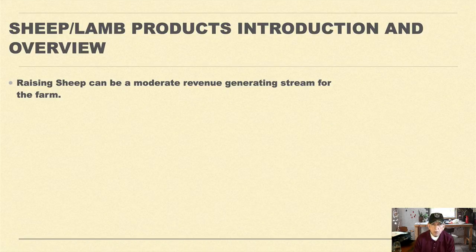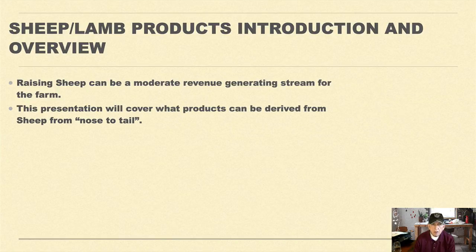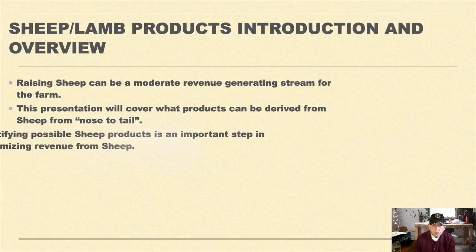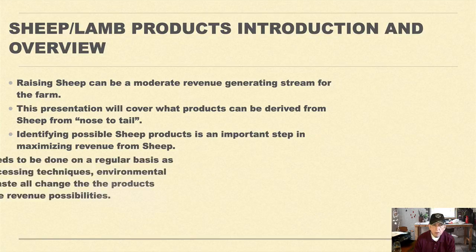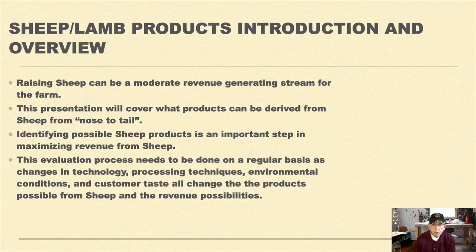Raising sheep can be a moderate revenue-generating stream for the farm. This presentation will cover what products can be derived from sheep from nose to tail. Identifying possible sheep products is an important step in maximizing revenue from sheep. This evaluation process needs to be done on a regular basis, as changes in technology, processing techniques, environmental conditions, and customer tastes all change the products possible from sheep and the revenue possibilities.